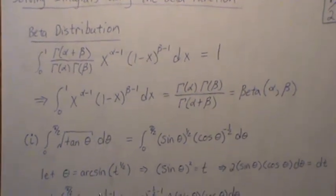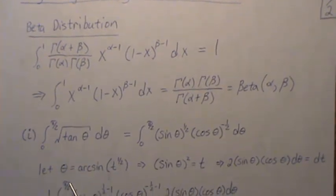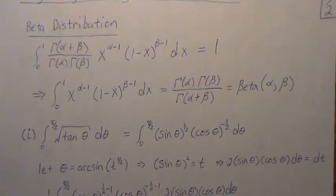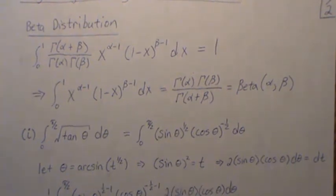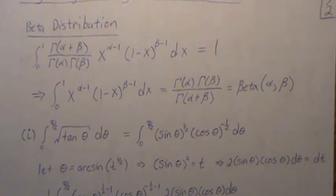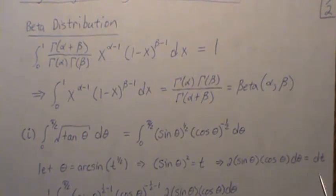Now we're going to use the following substitution: θ equals the arcsine of t to the 1/2, which implies that t equals sine θ squared, and then when we differentiate we get this.